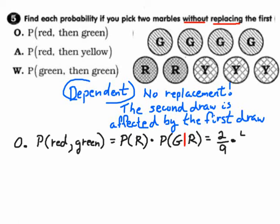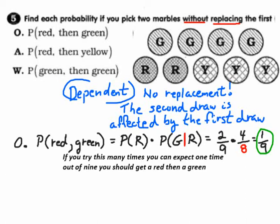How many of those eight marbles are green? Four — so 4 out of 8. Multiply: (2/9) × (4/8) = 8/72, which is 1/9. So if you tried this experiment many times, you'd expect to get red then green about one time out of every nine.